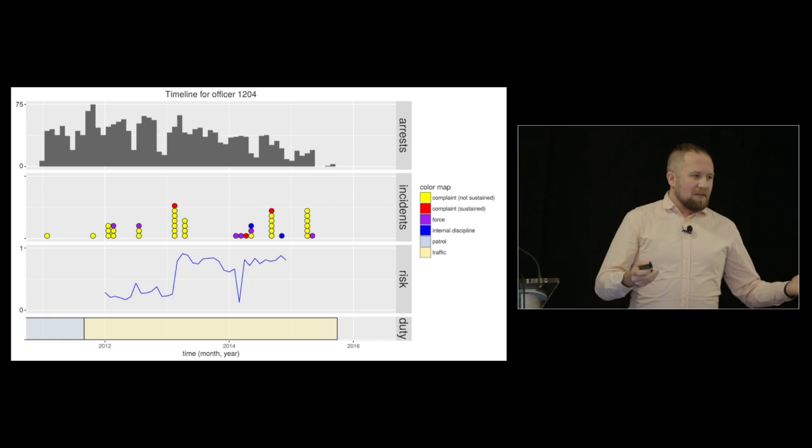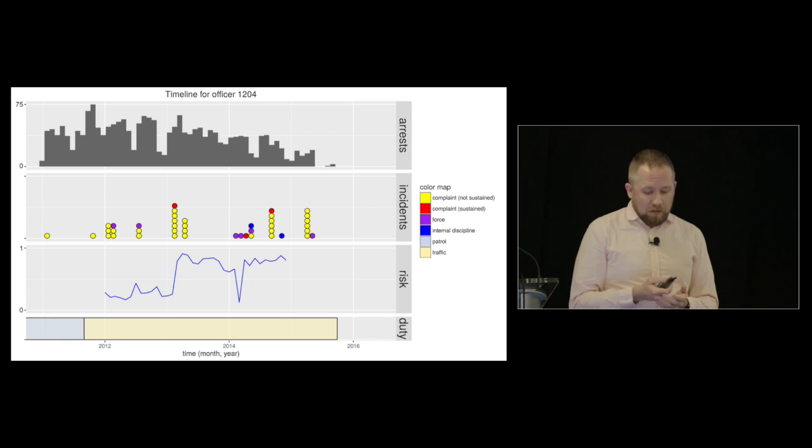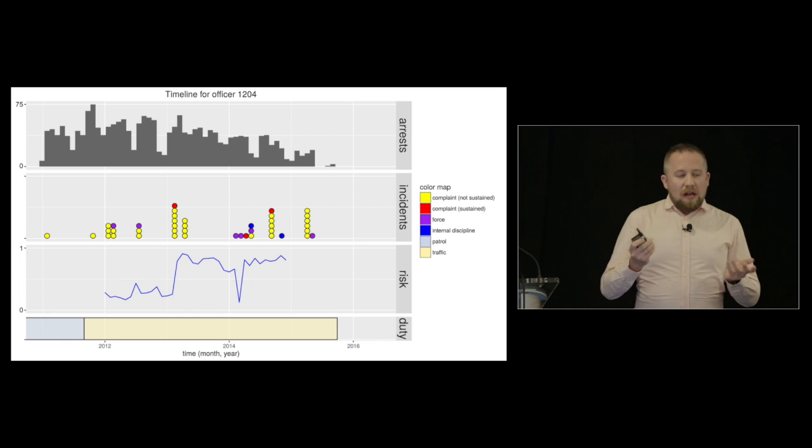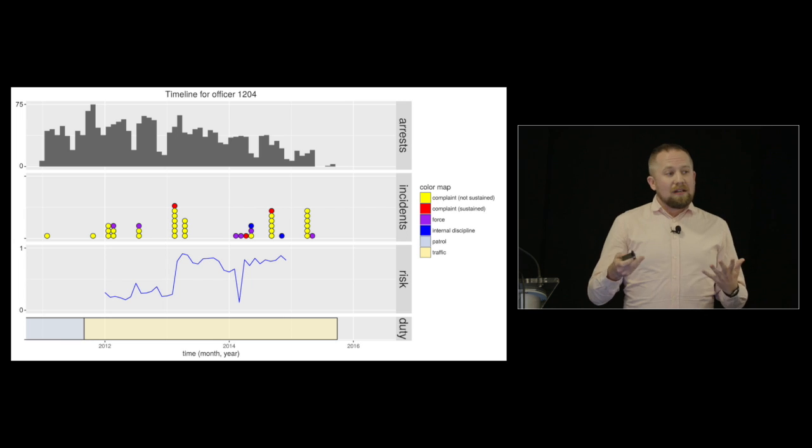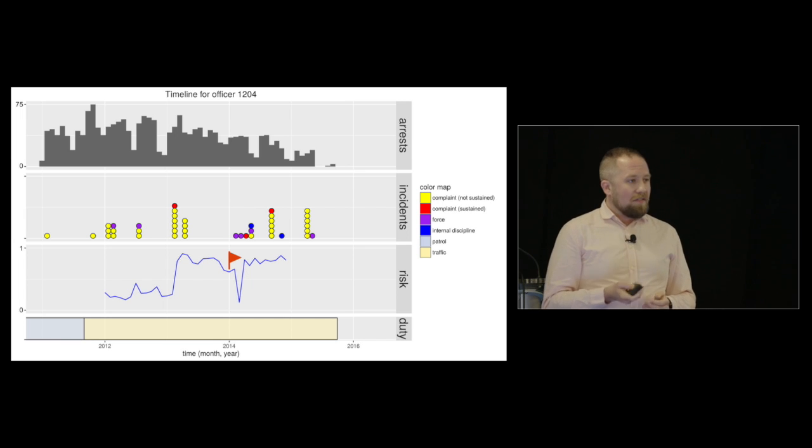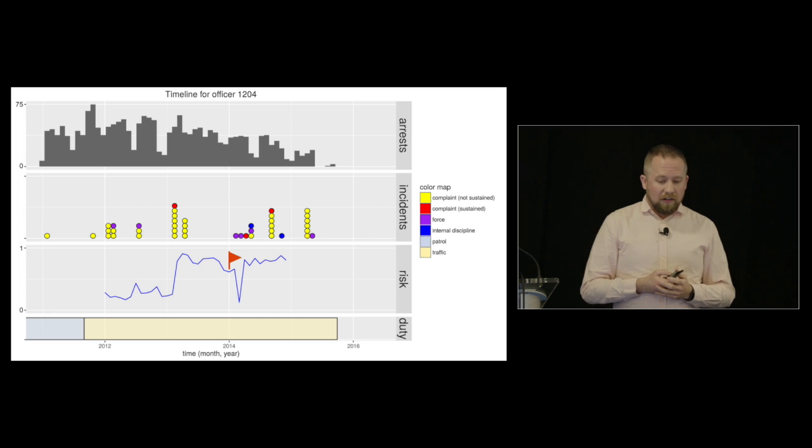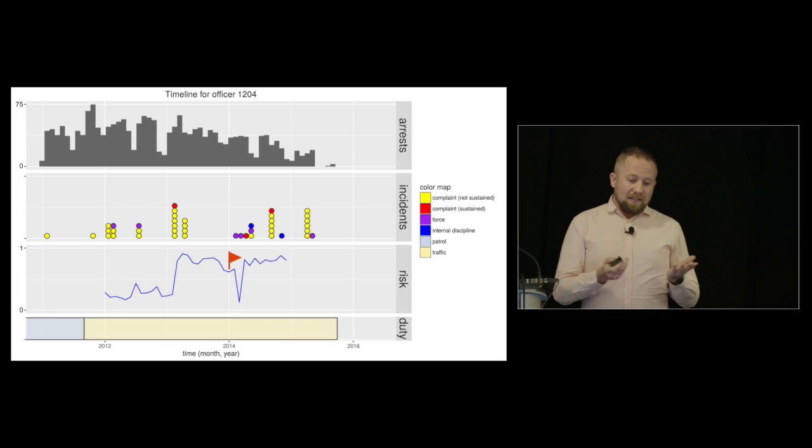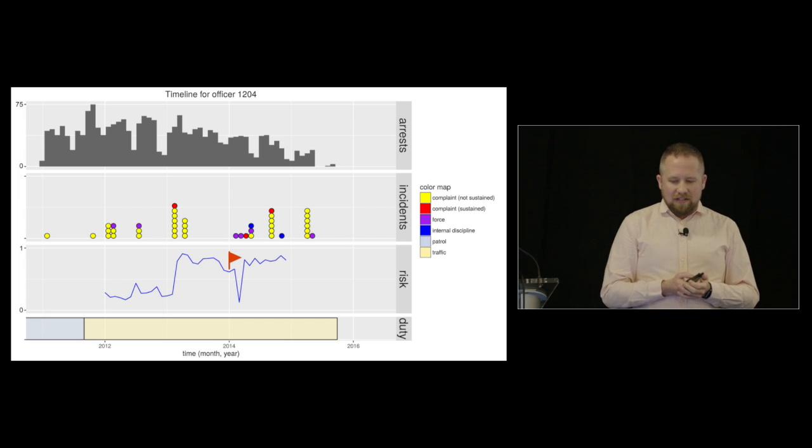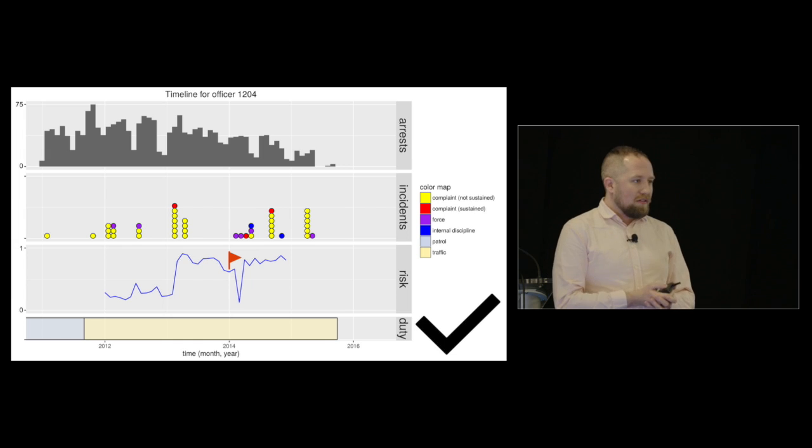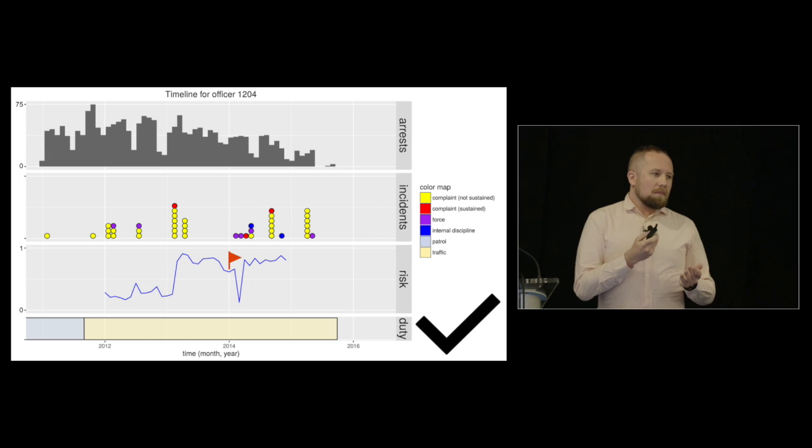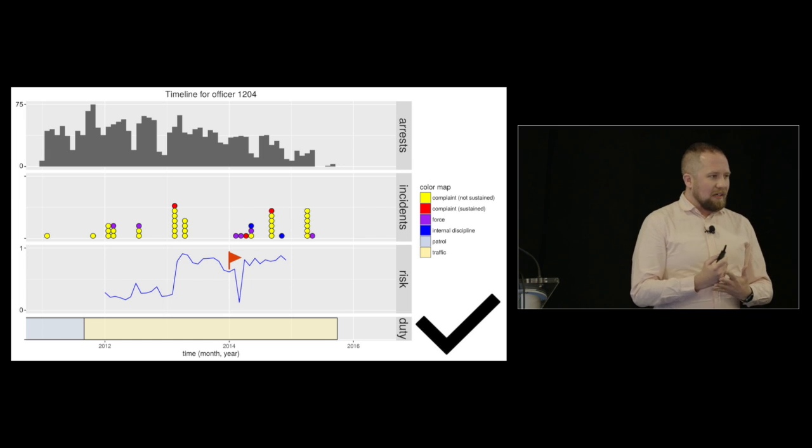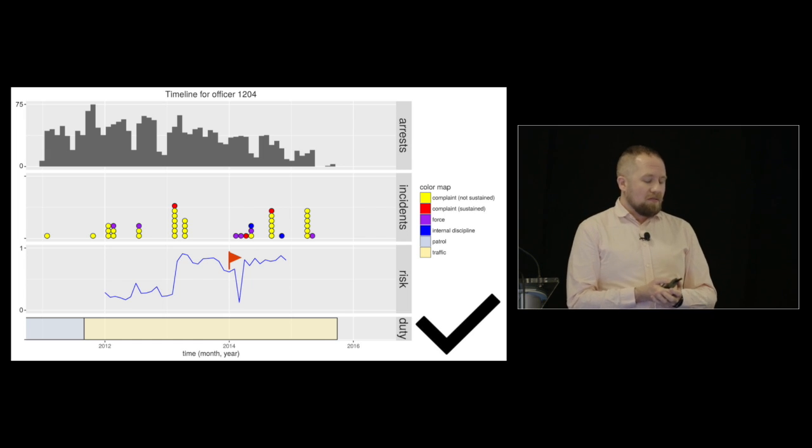And that's something that comes up over and over in our models. Police officers who have these types of events in the past are likely to have them in the future. And so in an imaginary world where we're in 2014, and we had implemented this system, we would have flagged this officer as being at high risk of having an adverse incident going forward. If you look at the next year, we see that there are actually a number of these adverse incidents. So this is a place where our model did right. We flagged the officer. And ideally, if this were working, there would be some sort of intervention, training, counseling, and we could hopefully prevent these incidents from happening.